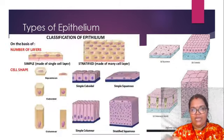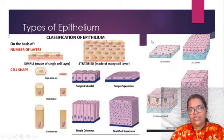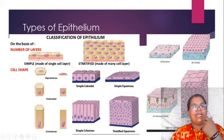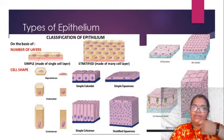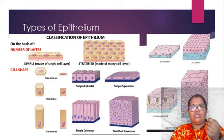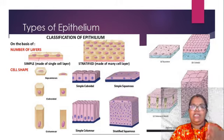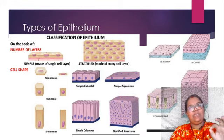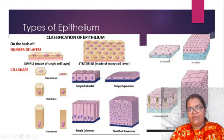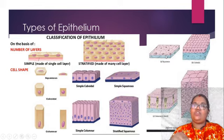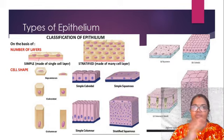Here you can see the squamous epithelium, which is flat and mostly seen in the buccal cavity. If you take a toothpick and take a sample of the cheek cell, spread it on a slide, stain it, and observe under a microscope, you can easily see the flat single layer of simple squamous epithelium. Here you can see that the blue-colored layer is the basement membrane, which is actually separating the epithelium from the tissue beneath.